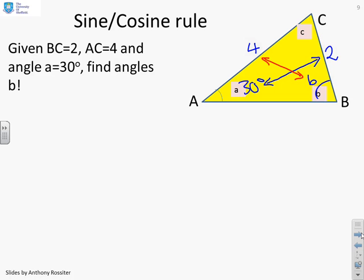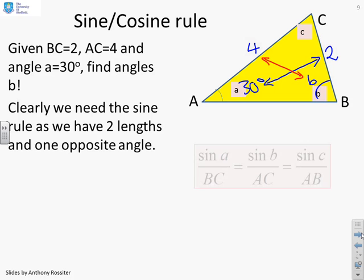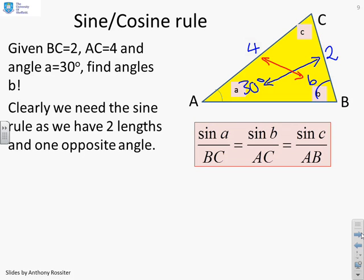So I must need to use the sine rule. So in this particular case, I'm going to use the sine rule, and you'll see I'm going to use this part, sine A over BC, and this part, sine B over AC. So if I write that out, you'll see I've got sine 30, sine A, divided by BC, which is 2.